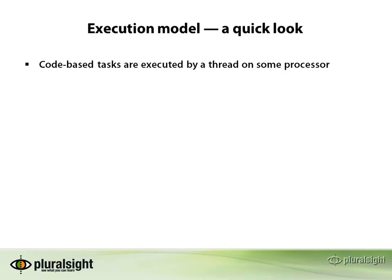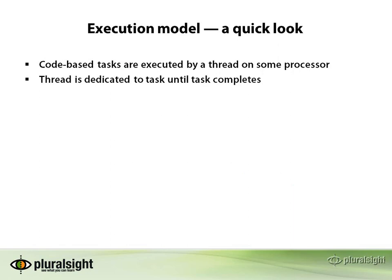Let's take a quick look at the execution model of our tasks. The goal here is a basic overview; we'll get into more of the details in a later lecture. On a previous slide, I was creating a task and providing the code, which denoted the computation I wanted the task to perform. The basic concept is that code-based tasks are executed by a thread running on some processor in the machine. Note that threads are what we call sticky — a thread is dedicated to that task until the task completes.